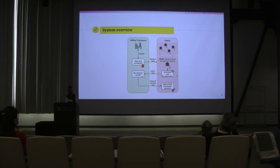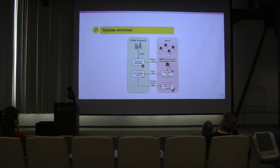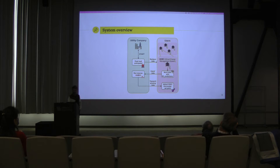We have a machine learning model that is able to predict how much power we can save with these changes. These options are then sent to the utility company, which uses all this information to select the users that would allow the power conservation required. And once these users are selected, through the smart energy management system, the utility company will actuate the changes in the thermostat.